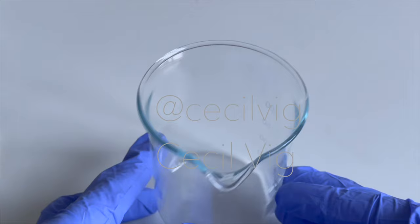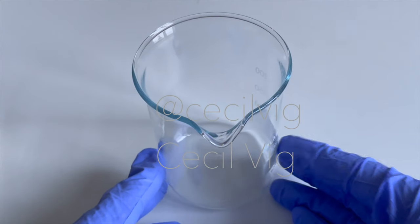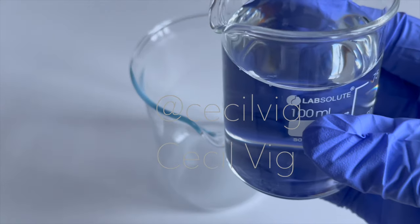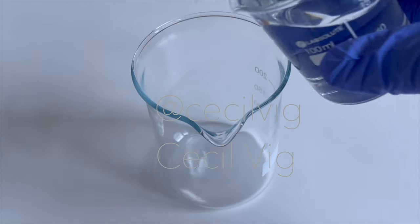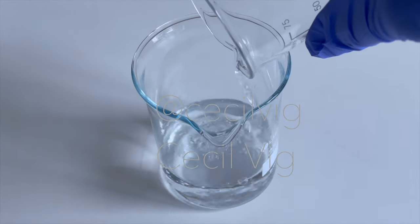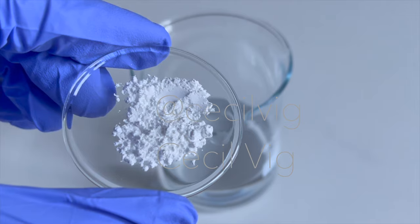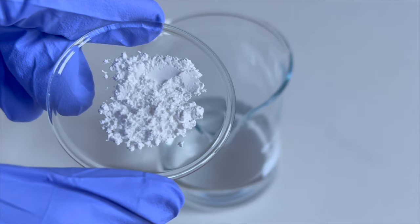For this phase, we need a beaker to mix the ingredients in. I pour my distilled water into the beaker. If you wish, you can replace distilled water with any floral water or hydrosol of your choice. I add the allantoin to the distilled water and mix until it dissolves.